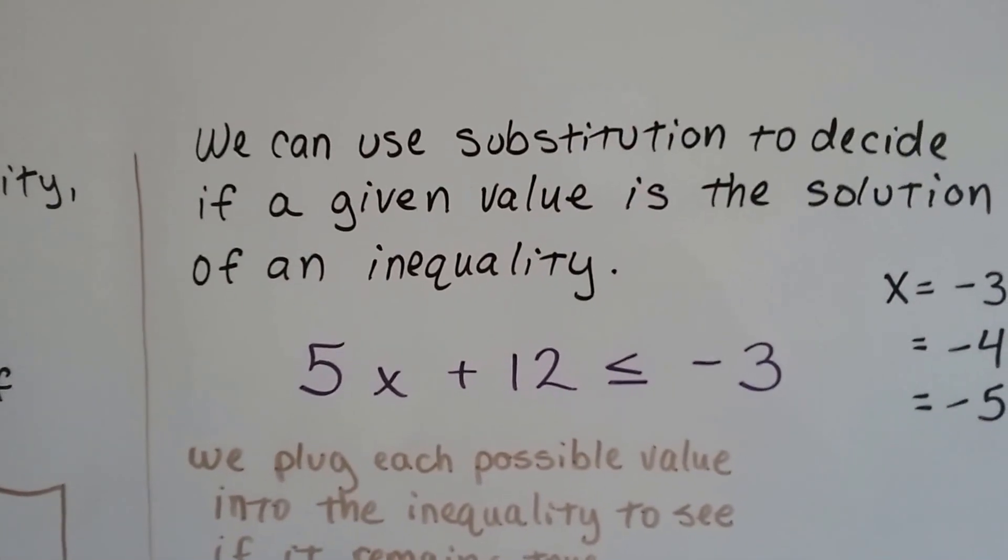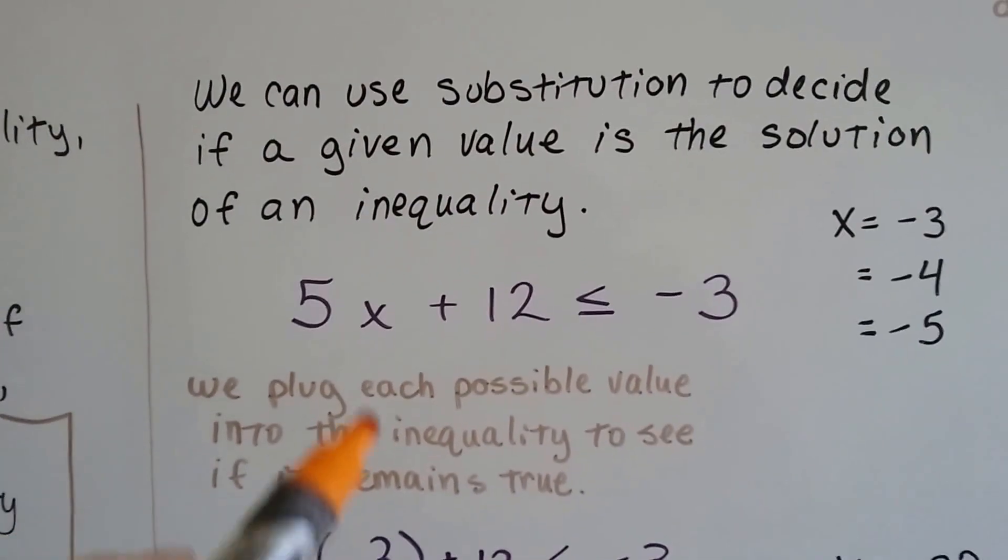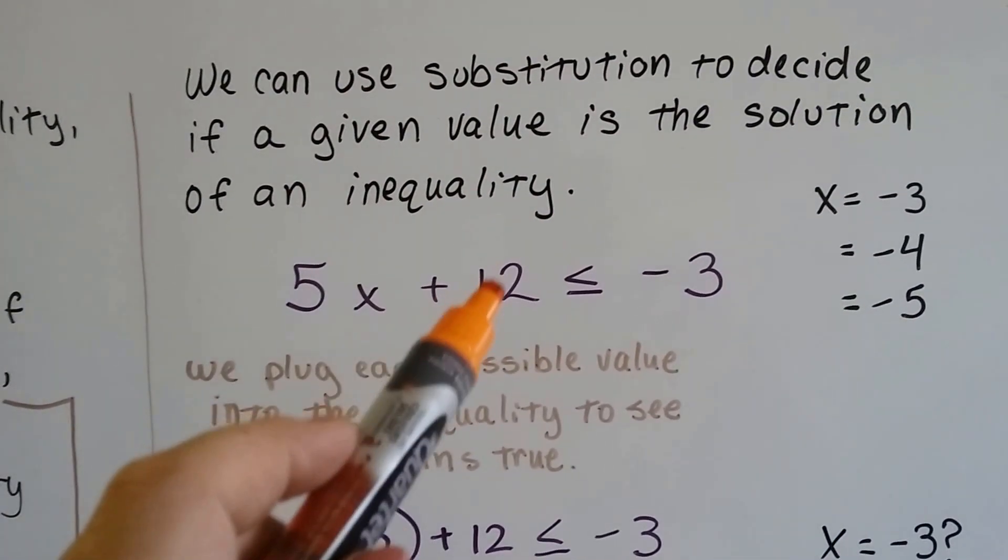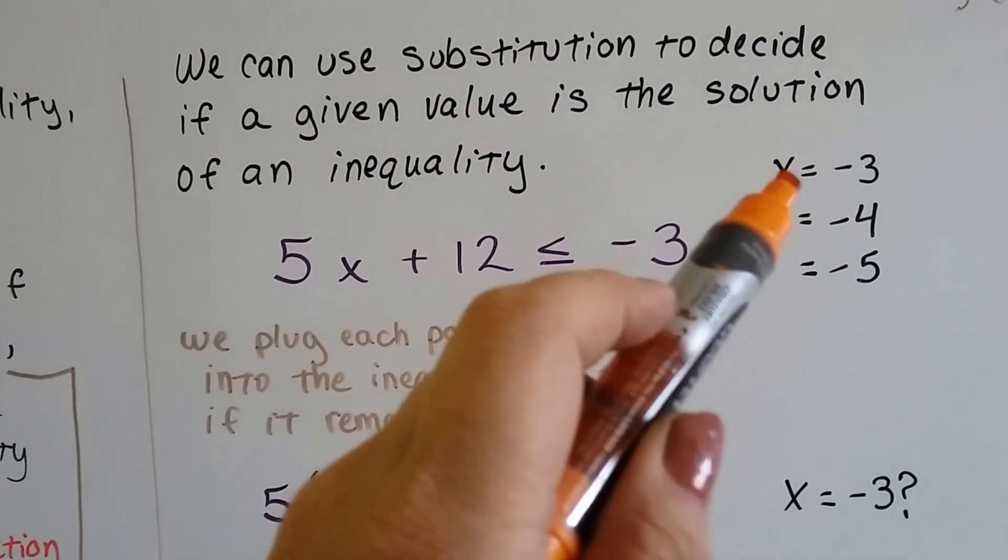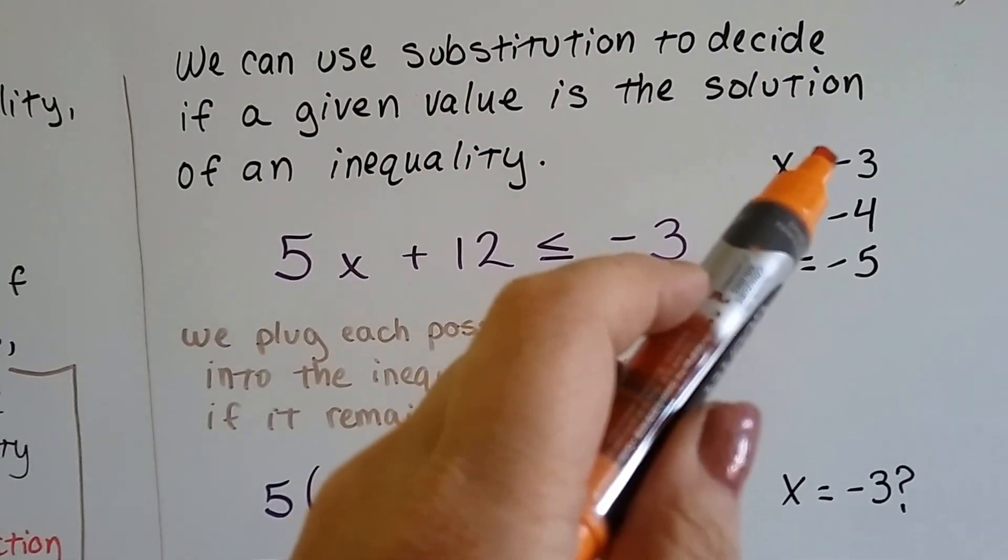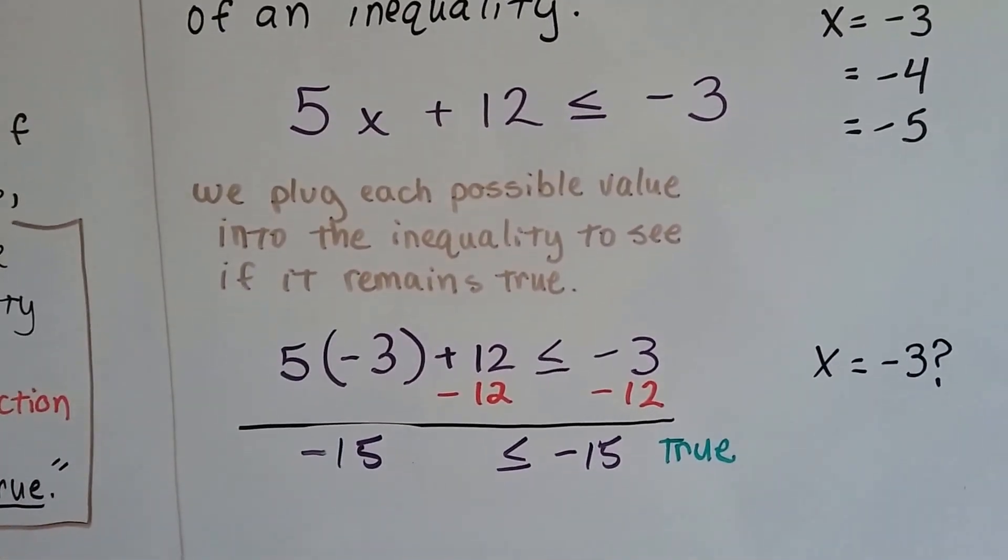We can use substitution to decide if a given value is the solution of an inequality. If we have 5X plus 12 is less than or equal to negative 3, and we're given X equals negative 3, negative 4, negative 5, we can plug each one in to see if it keeps it true.